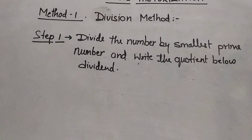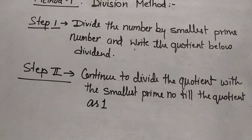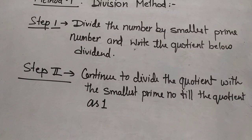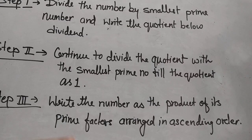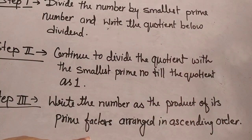To find the prime factors by the division method, follow these steps. Step 1: Divide the number by the smallest prime number and write the quotient below the dividend. Step 2: Continue to divide the quotient with the smallest prime number until the quotient is 1. Step 3: Write the number as the product of its prime factors arranged in ascending order.